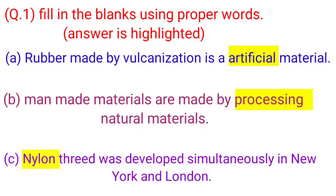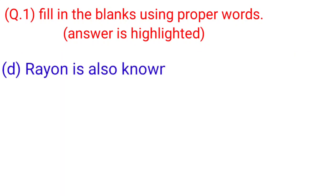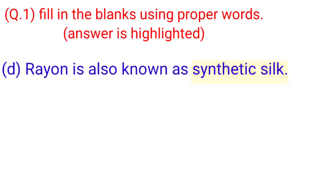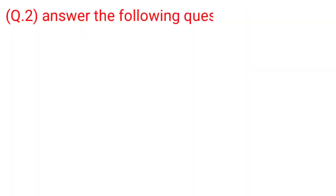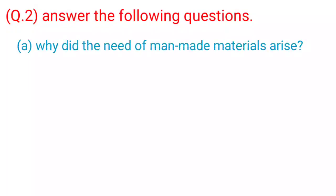C. Nylon thread was developed simultaneously in New York and London. D. Rayon is also known as synthetic silk. Question 2: Answer the following questions. A.